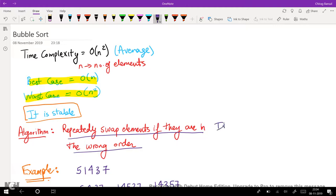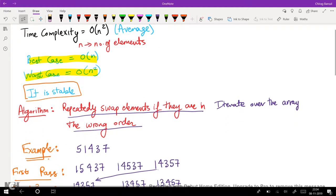So we iterate over the array, and if the previous element is larger than the next element we swap them, and then we do it incrementally. So let's look at an example.